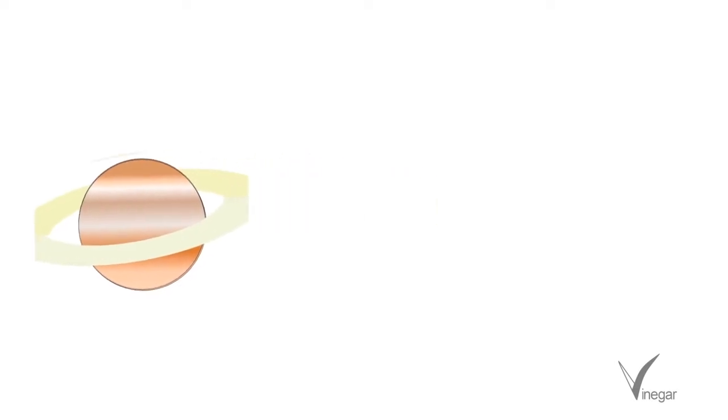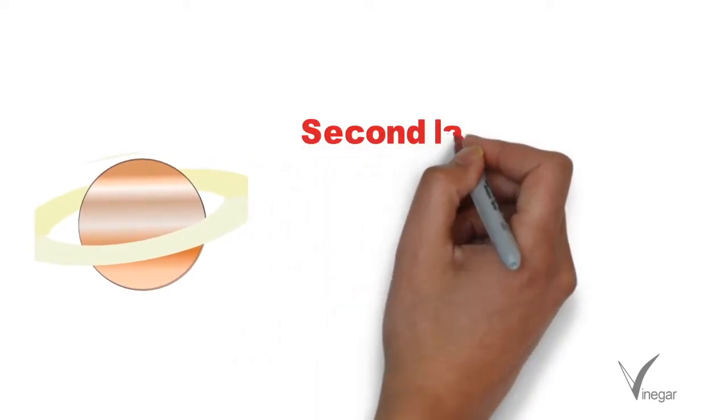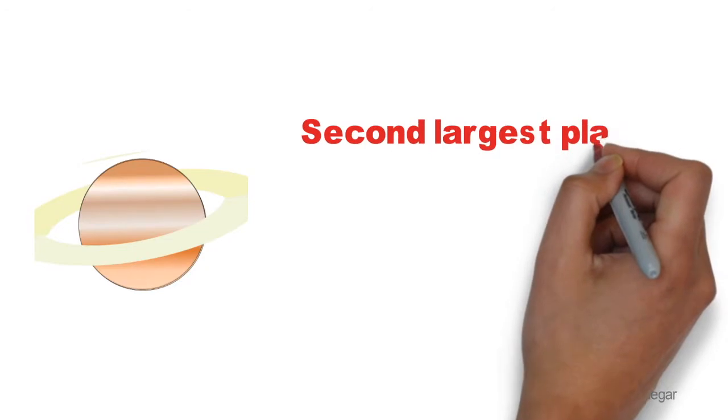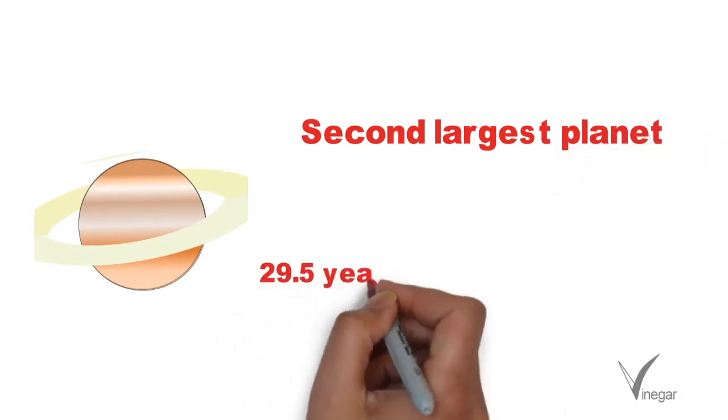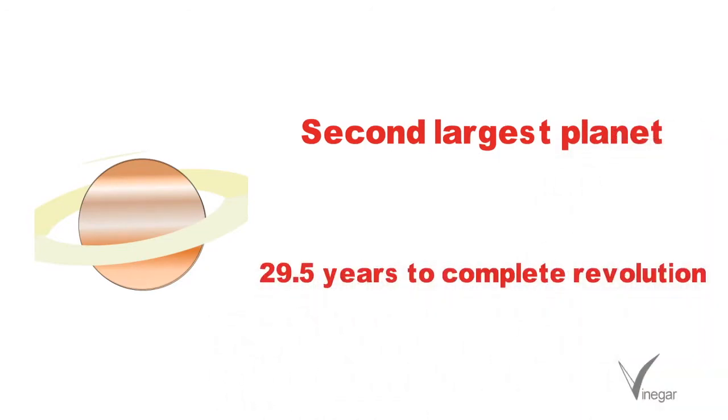Next comes Saturn. It is the second largest planet after Jupiter. It is so far from the sun that it takes 29.5 years to complete its revolution.